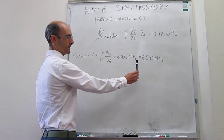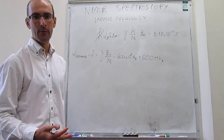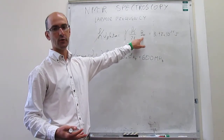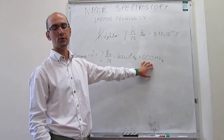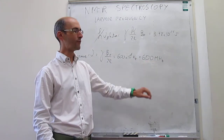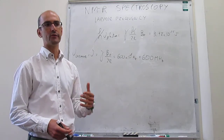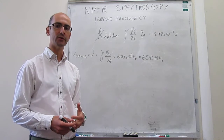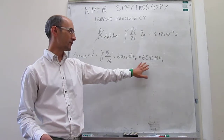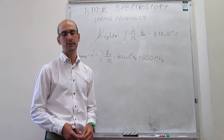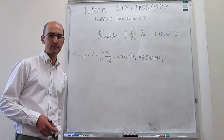It is common that modern spectrometers are described not by the external magnetic field — in this case 14.1 tesla — but instead by the Larmor frequency of a bare proton. So we talk about 600 MHz spectrometers, 300 MHz spectrometers, or 800 MHz spectrometers. All of those correspond to a different magnetic field, but it is easier to use this nominal frequency of the spectrometer.